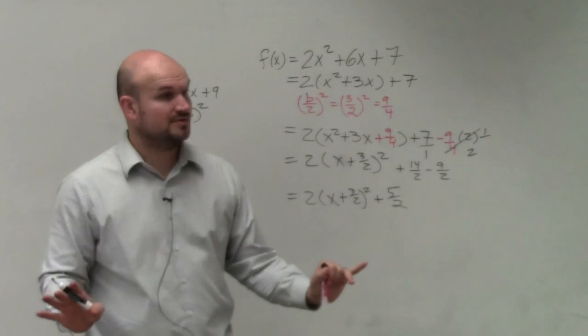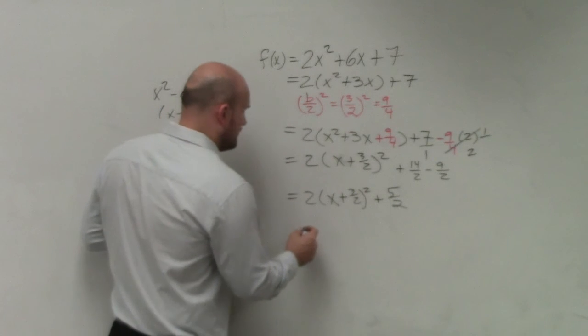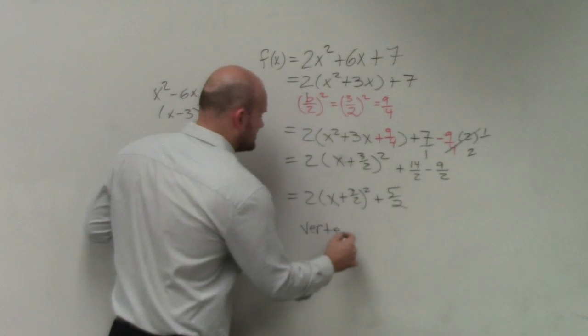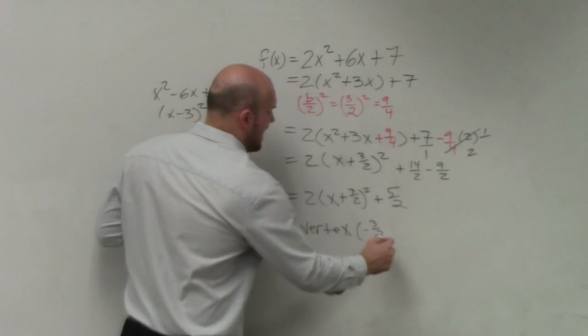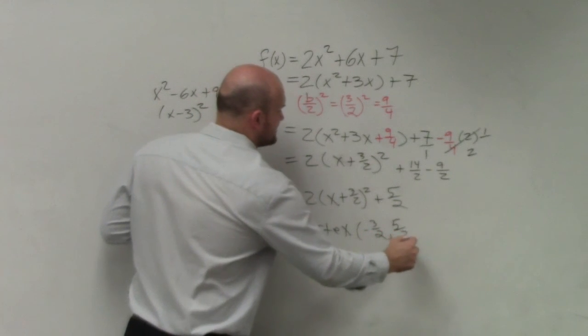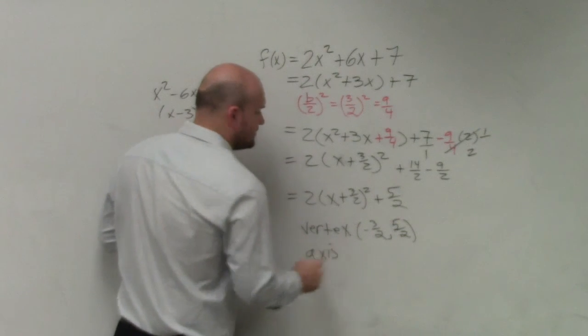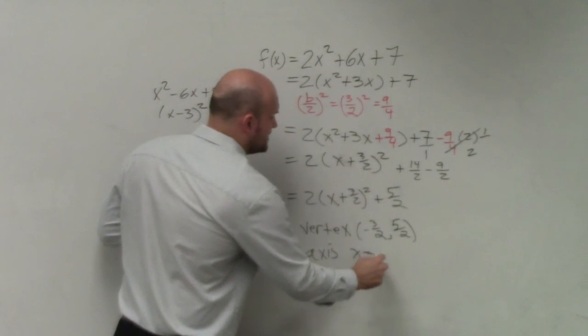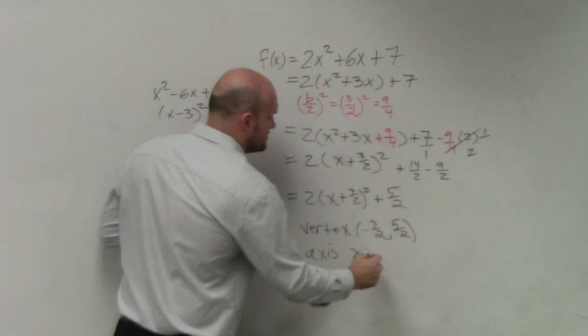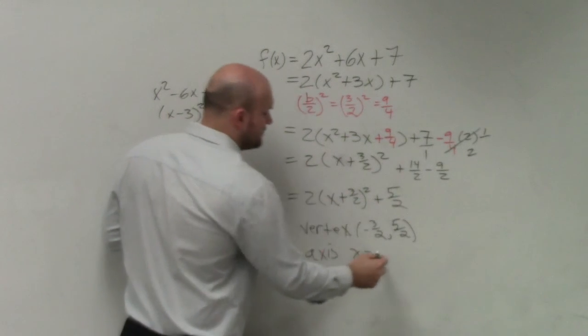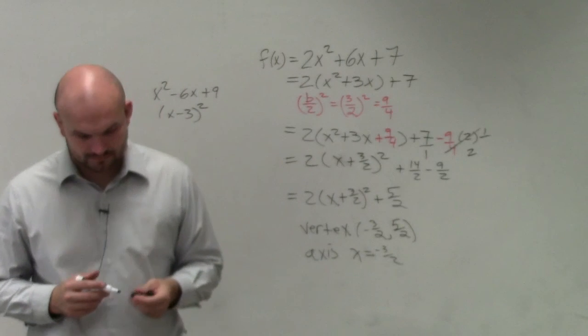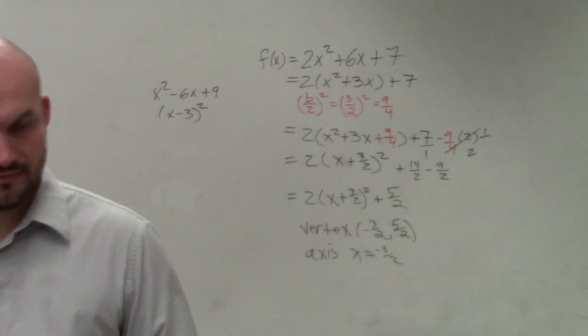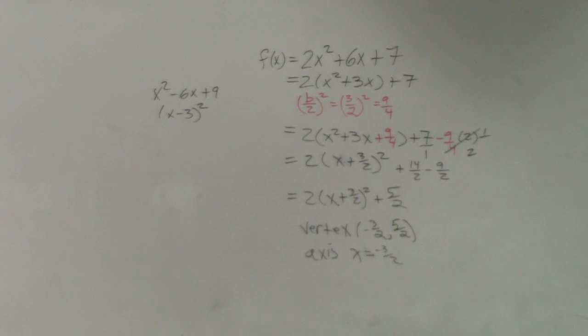So there it is with fractions. That's okay. Please don't use decimals. Now our vertex. I think they just wanted you to find the vertex, right? Our vertex is negative 3 halves, comma 5 halves. And they wanted you to find the axis of symmetry. Axis of symmetry is a vertical line, so it's x equals the x-coordinate of your axis, which is negative 3 halves.